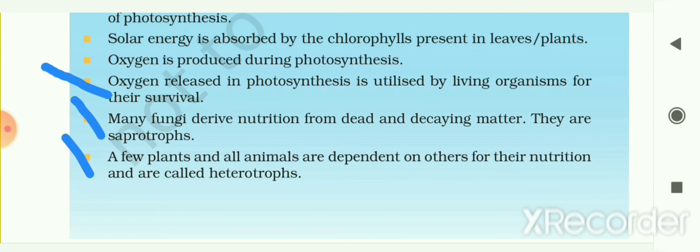The process of synthesis of food occurring in the leaves of plants is called photosynthesis. For this process, plants require sunlight, chlorophyll, carbon dioxide, and water. Other modes of nutrition include parasitic nutrition, insectivorous nutrition, and saprotrophic nutrition.